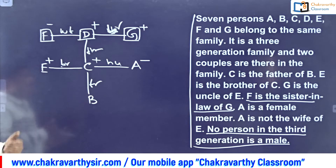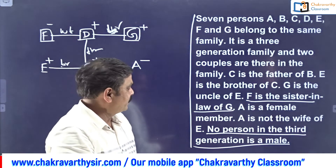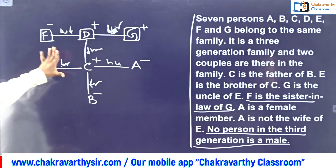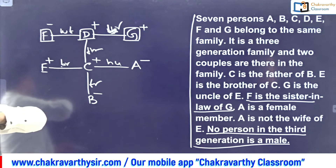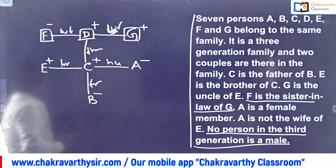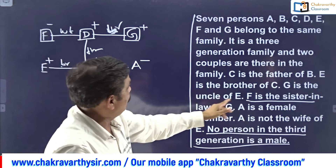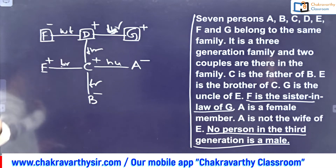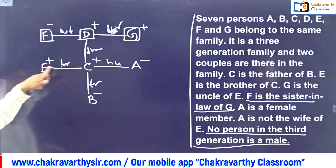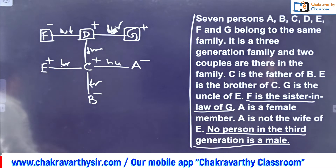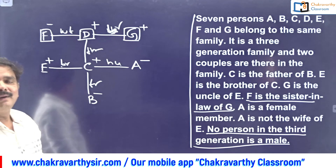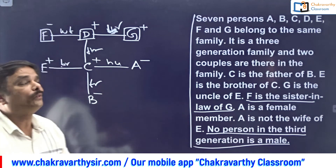Now coming back to genders: no person in the third generation is male, so B must be female. Final relationships: F is wife of D - one couple. D is brother of G - G being male. D and F are one couple, with children C and E, both male brothers. C is husband of A - second couple. And B is daughter of C and A. This is the analytical way of doing the questions.